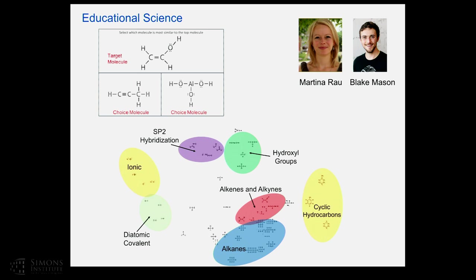Along similar lines, Blake Mason and Martina Rao at Wisconsin did a very similar experiment with chemistry molecules. They went to a chemistry class and asked students: here's a triplet of three molecules - which of the bottom two is closest to the top molecule? They tried to create an embedding. The goal is to eventually work towards a personalized tutoring system. They gathered queries from the chemistry class and got an embedding with clustering that's not unrealistic from a chemistry perspective - though given these are all cyclic hydrocarbons, it's not immediately clear what's being perceived. Next provides a useful tool for these researchers to run experiments and gather data.